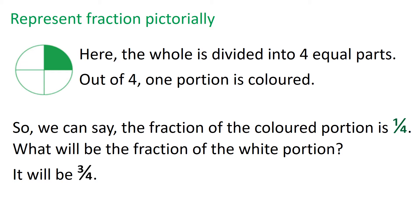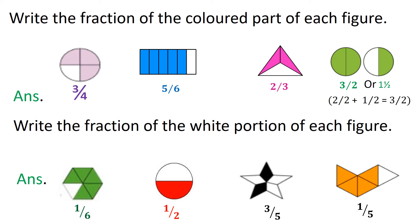Can you see a circle here, which is divided into four equal parts? Out of these four equal parts, one portion is colored. If I ask you what is the fraction of the colored portion, it will be one fourth. And what will be the fraction of the white portion? It will be three fourth — three portions out of four portions are white in color. Let us do a few questions.